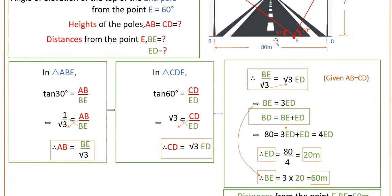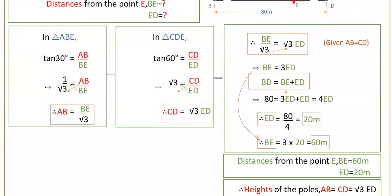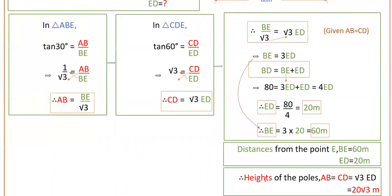Once we have ED = 20 meters, we calculate BE = 3 × 20 = 60 meters. So the distances from point E are 60 meters and 20 meters, and together they total 80 meters. The height of each pole is CD = √3 × ED = √3 × 20 = 20√3 meters.